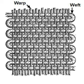Weaving is a method of textile production in which two distinct sets of yarns or threads are interlaced at right angles to form a fabric or cloth.